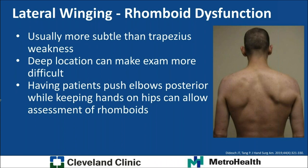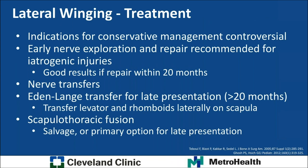Winging due to rhomboid dysfunction is usually much more subtle than trapezius weakness, since rhomboids only have one action and the trapezius compensates for some of their work. Compared to medial winging, indications for conservative management of lateral winging are much more limited and even controversial. Due to the mechanism — usually complete nerve laceration — early nerve exploration and repair is generally recommended, especially for iatrogenic injuries. These historically have good results if repaired within 20 months. Nerve transfers have also been described, though most reports are small case series.